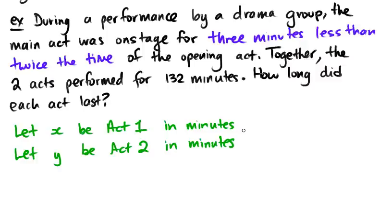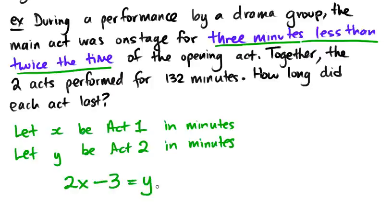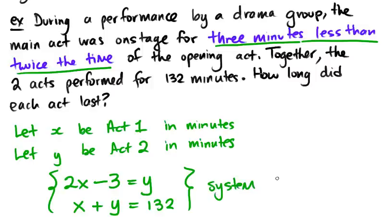Now we need to interpret 'three minutes less than twice the time of the opening act.' The opening act was x, so twice the time is 2x, and three minutes less than that is 2x - 3 equals y. The first act plus the second act equals 132, so x + y = 132. This is a system, and we can solve it a few different ways.